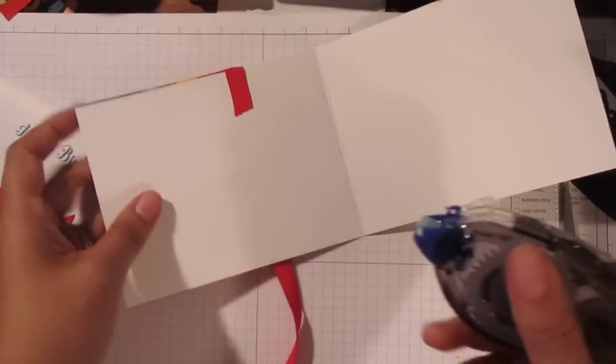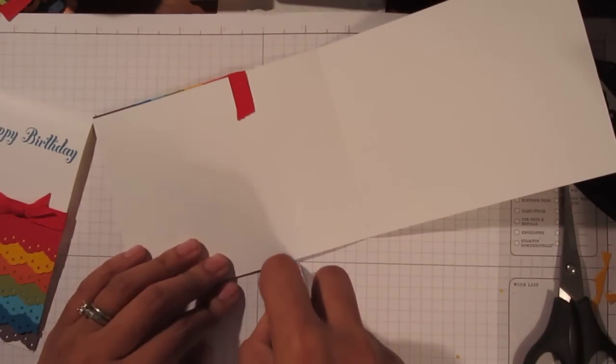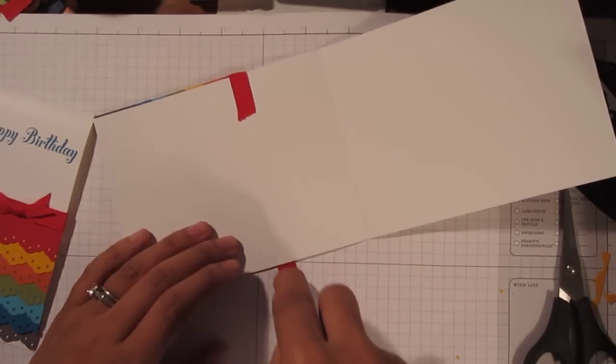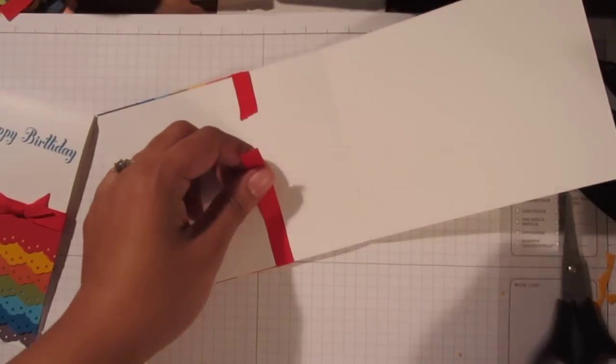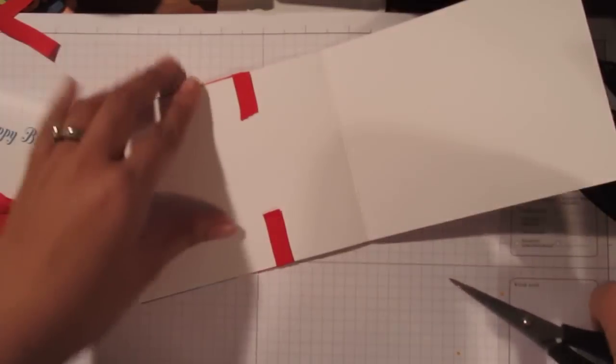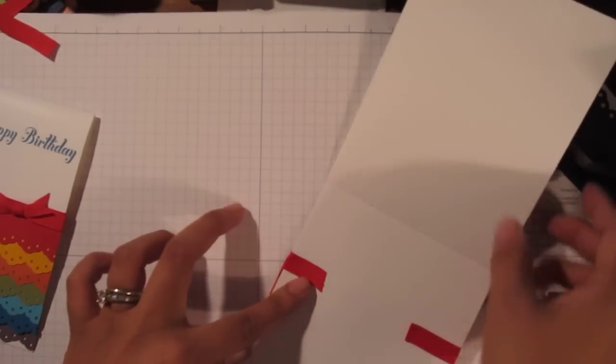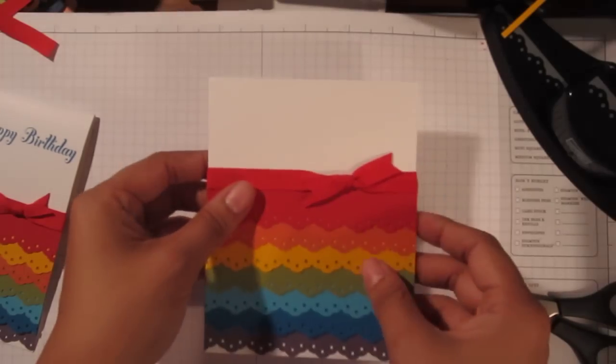Oops. So there's the edge of the ribbon. I'm going to put a piece of whisper white over this later. There's this.